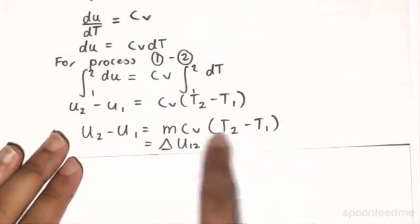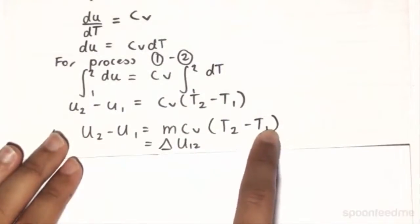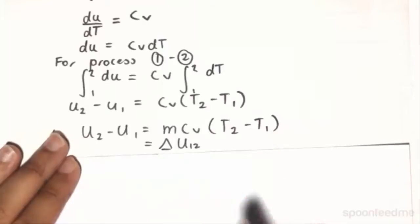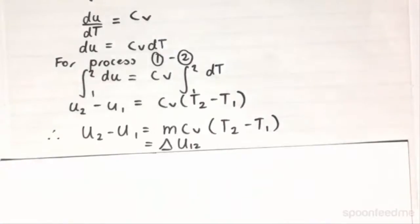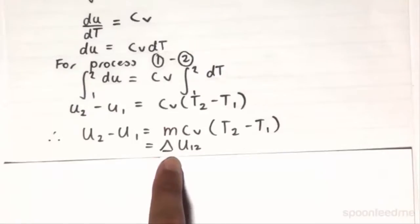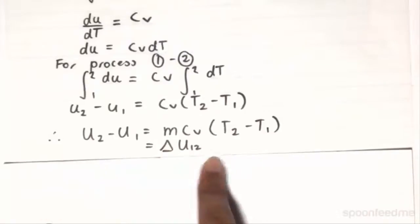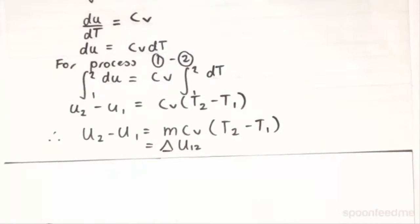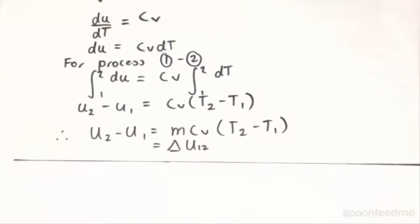So this equation right here is valid for ideal gases only. And it is a crucial equation, especially when we are analyzing the first law of thermodynamics, because as you recall from the first law of thermodynamics for closed systems, Q minus W equals delta U12. And so now we have an equation for delta U12.